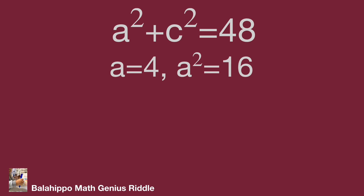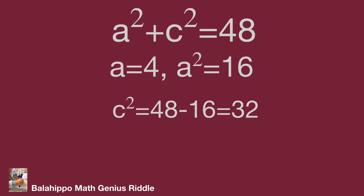Since a must be greater than or equal to c, we don't need to calculate values of a less than 4. With a equal to 4, c squared equals 48 minus 16 equal to 32 — c is not an integer, and it also conflicts with the definition a greater than or equal to c. So there is no valid solution in the b equal to 2 group.